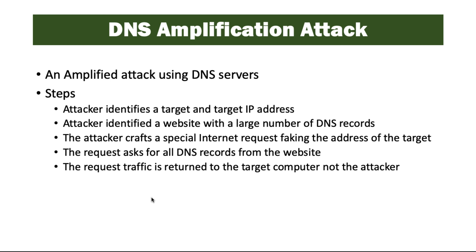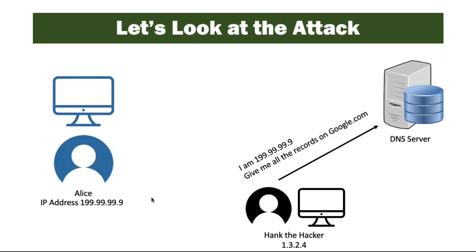So let's take a look at how this would look. We have Hank the Hacker here. His address is 1.3.2.4, again a fake address. And we have Alice, who is the victim here. Her fake address is 199.99.99.9.